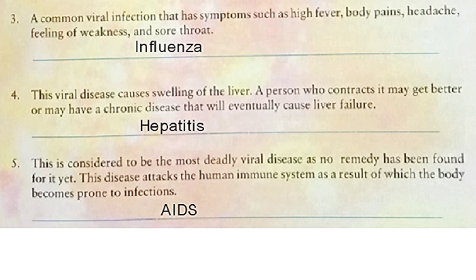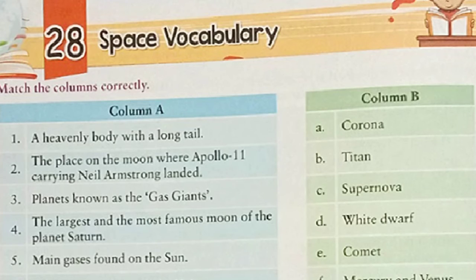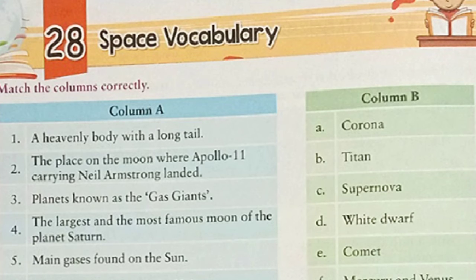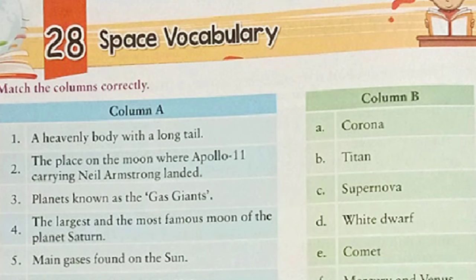So, we will see our next exercise. Here is our last exercise of this unit — Space Vocabulary. Here we have to match the columns correctly. We have to read out the clues given in column A to find out the correct match from column B. Let's start with our first one: a heavenly body with a long tail. Yes, you are right. It is comet and it is given in point E in column B. So, in front of number 1, we will write E.